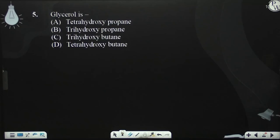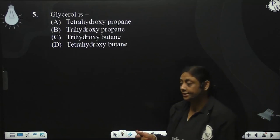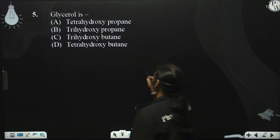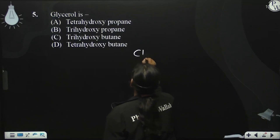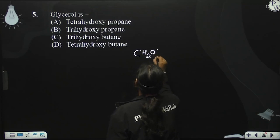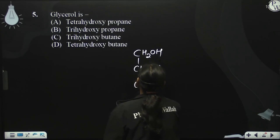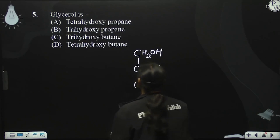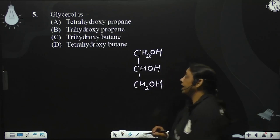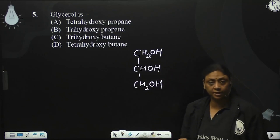Glycerol — first we will see how the structure of glycerol is. I will show you. It is CH2OH, CHOH, and again it is CH2OH. So it is 1, 2, 3-trihydroxypropane.